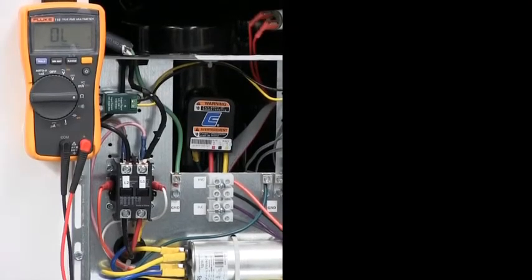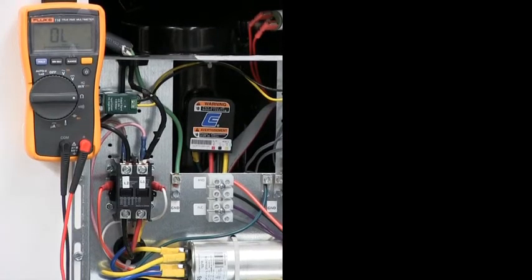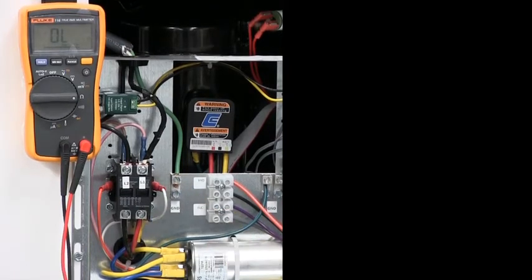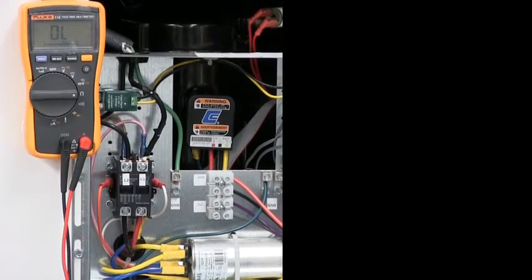To check the compressor windings, the first thing you'll want to do is make sure there's no power applied to the unit. Power would be coming in from L1 and L2. I've already checked to see that there's no voltage and the disconnect is disengaged.